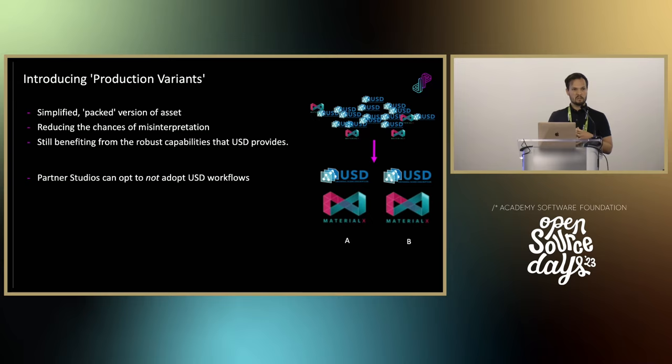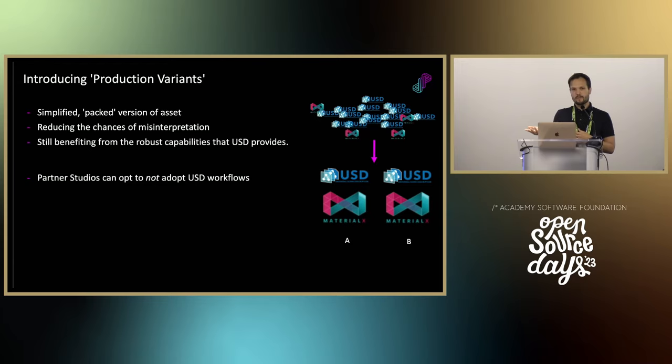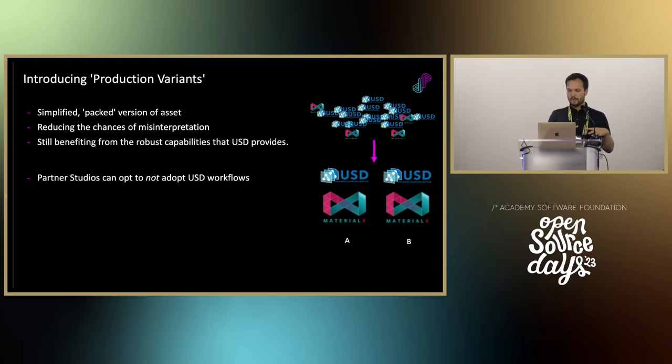So diving into production variants — a simplified packaged version of an asset. A USD asset has all these interdependencies and pointers, all these amazingly powerful composition arcs. But what we decided was: okay, we break this down, and every representation of an asset, we just bake it into a discrete package. The benefits: these packages are very easy to talk about — here's the red car, here's the blue car, here's version 1 or version 6. Very straightforward. The second benefit is it can just be read in an Arnold stand-in and it renders. If you want to do instancing, you can just put it in and it works out of the box. Or you can unpack it — we don't want to dictate the pipeline to a vendor studio, so we empower them to read it as a stand-in, or translate USD to Maya data, take the MaterialX file and apply it in Arnold.